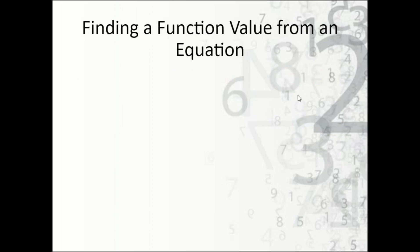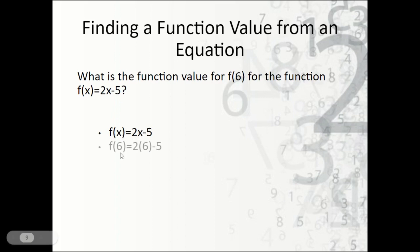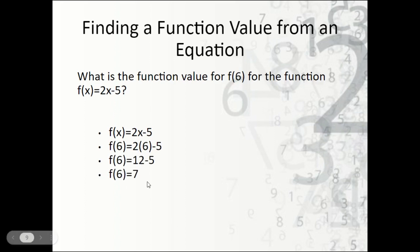How do we find a function value from an actual equation? What is the function value for f of 6, given f of x equals 2x minus 5? We take f of x equals 2x minus 5 and plug 6 in for x. So f of 6 equals 2 times 6 minus 5. Two times 6 is 12, and 12 minus 5 is 7. So the function value for f of 6 is 7.